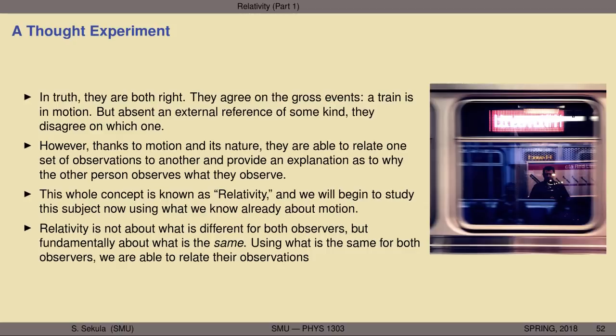Fundamentally, as we're going to see, relative motion is pivoting not so much on what's distinct about what two observers observe, but rather on what uniform things — what constancies in nature — they believe they can use to relate their observations.